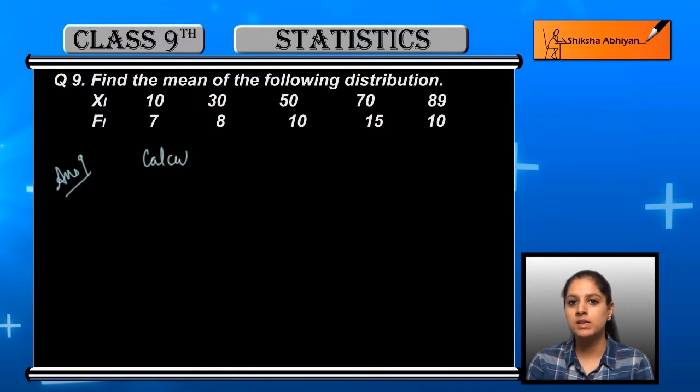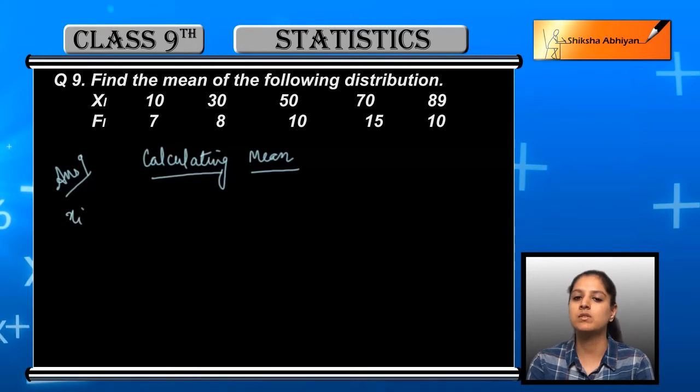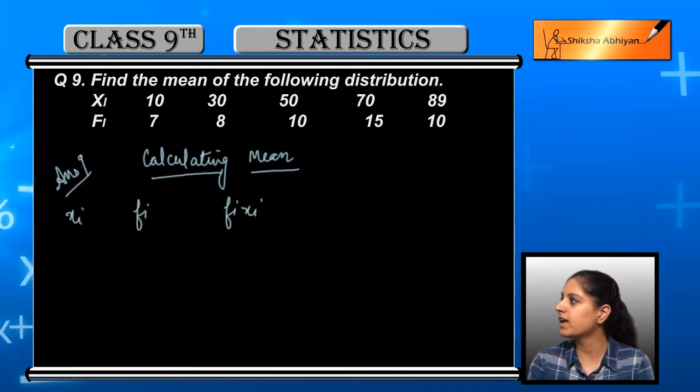For calculating the mean of this data, we're making columns: X_i for different values of X, F_i for different values of frequency, and F_i × X_i is the multiplication of both F and X.